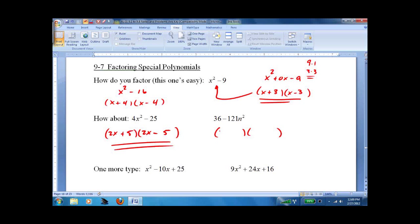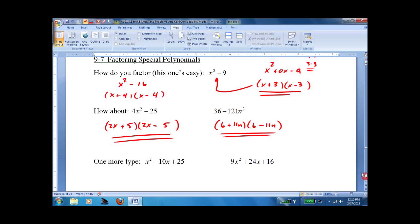So here, even though it's written wrong, we can still do it. 6 plus, 6 minus, 11n, 11n, done. A lot of people struggle with this because they don't realize how simple it is, how quick it is. So just make sure you see it and you shouldn't have any problems.